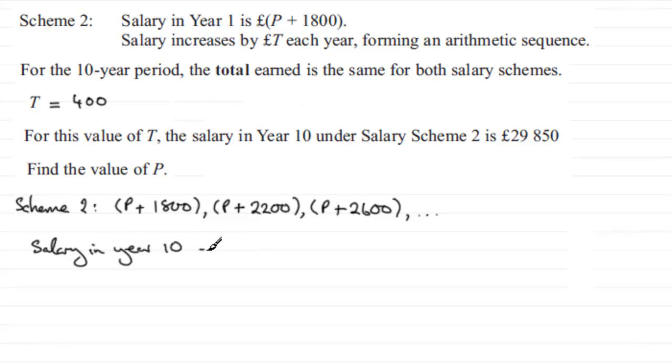...we know that it's going to be equal to a plus n minus 1 times the common difference d. The first term a is P plus 1,800, and then n minus 1—n is 10, so n minus 1 will be 9.